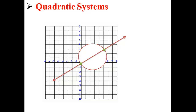Here we have a line intersecting a circle at two points. In this case, our quadratic system would have two solutions, one at each of these green points. Here we also have a line and a circle graphed on a coordinate plane, but there is no intersection. That means that this quadratic system would have no solution.